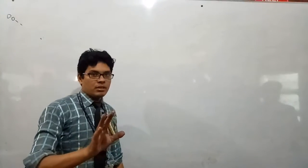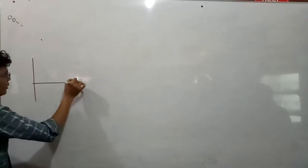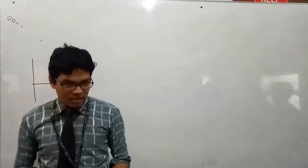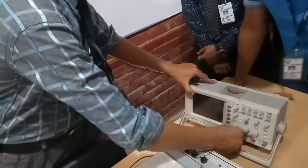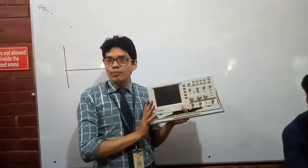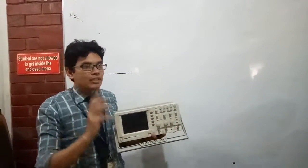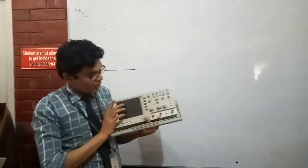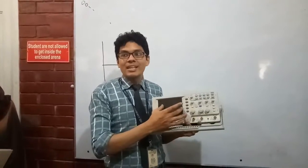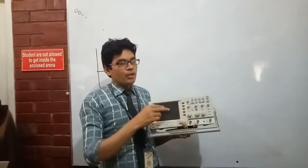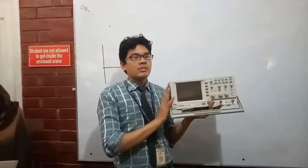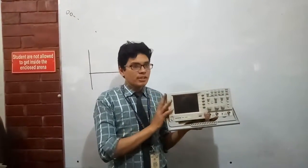There will be questions from each and every topic. We will be using the oscilloscope — this device here is called an oscilloscope. The job of this oscilloscope is to display wave shapes, frequency, and amplitude. Sometimes in the communication sector you can observe noise signals. The three most important things we will observe are wave shapes, frequency, and amplitude.